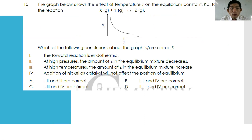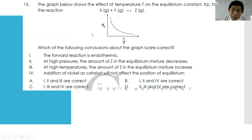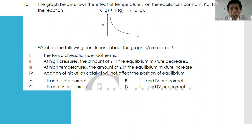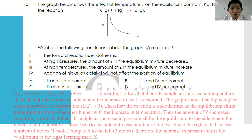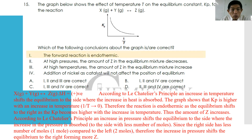For number fifteen: the graph shows the effect of temperature on equilibrium constant Kb, plotted against 1/T. The tricky part is that the x-axis is 1/T — inversely related to temperature. Kb decreases as 1/T increases, meaning Kb increases as temperature increases. When Kb increases as temperature increases, this indicates the forward reaction is an endothermic reaction.